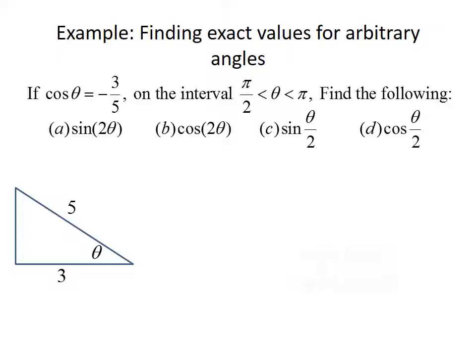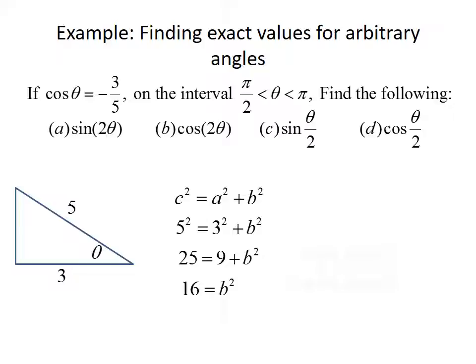To use the double angle or half angle formulas, it's useful to know both cosine and sine of our angle. We'll set up a triangle to find sine. Since cosine is negative 3 over 5, the hypotenuse is 5 and the adjacent side is 3. Using the Pythagorean theorem, 5 squared equals 3 squared plus b squared, giving us 25 equals 9 plus b squared, so b equals 4. Therefore sine of theta equals 4 over 5, and since we're in the second quadrant where sine is positive, sine theta equals positive 4 fifths.